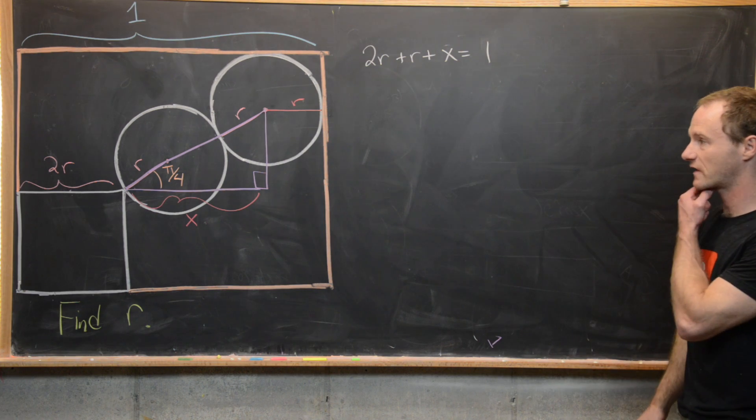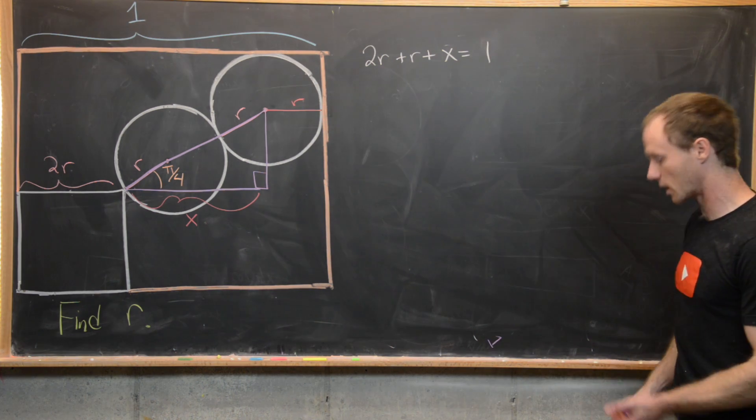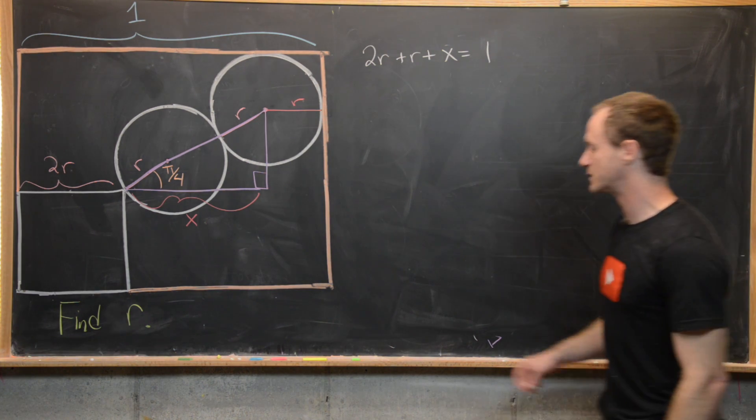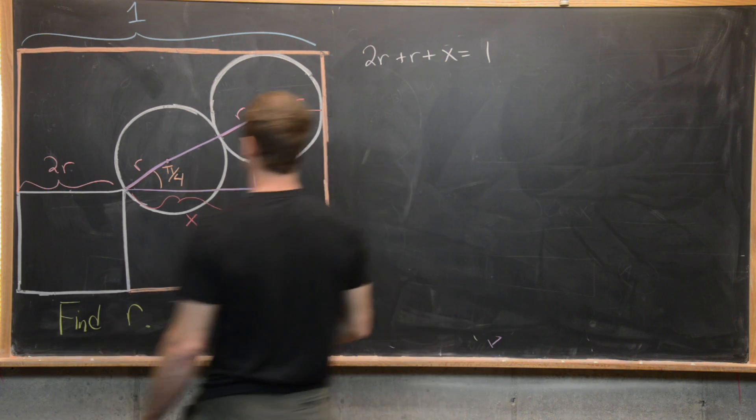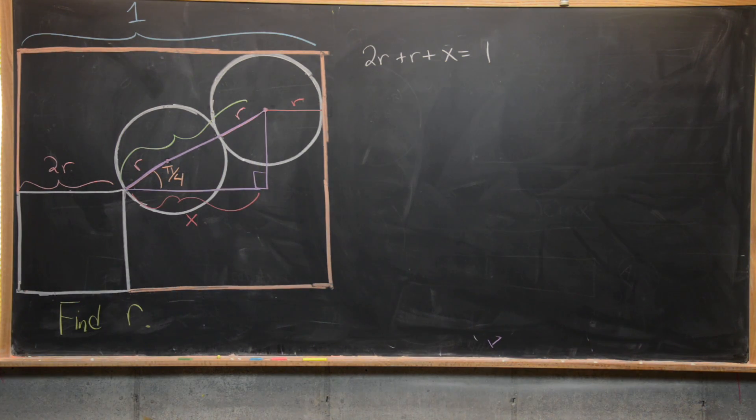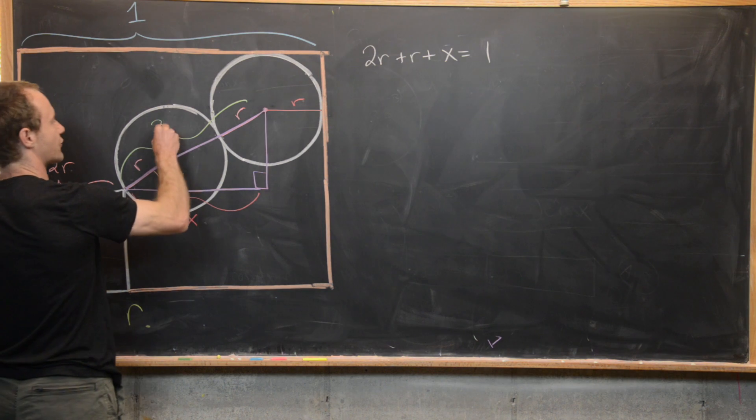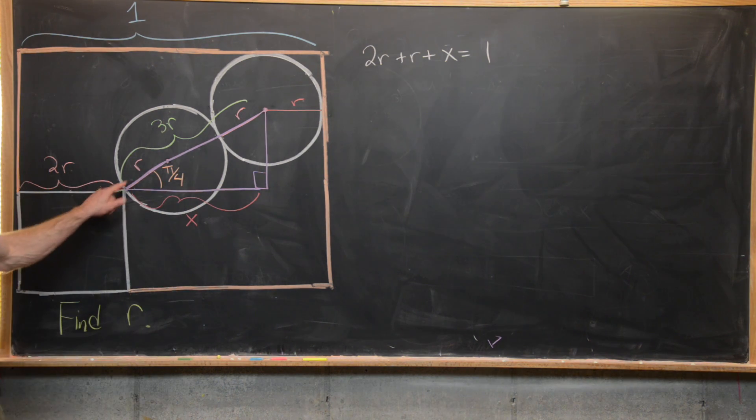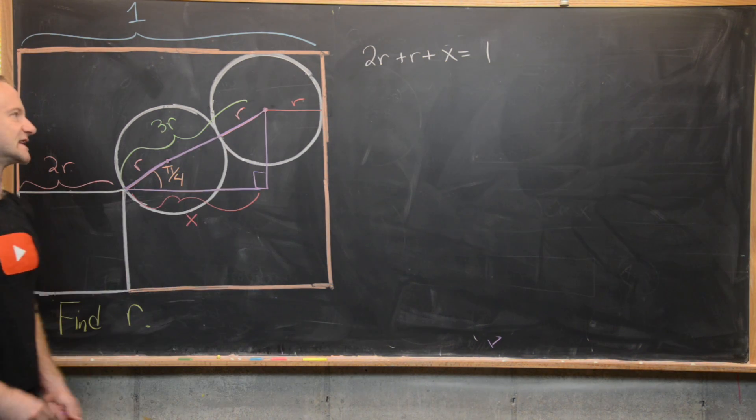Great. Now we just have to calculate x in terms of r. But that shouldn't be too bad because we've got some trigonometry that we can use. Notice that the hypotenuse of this triangle is 3 times r. We get a diameter from this circle and the radius from that circle.